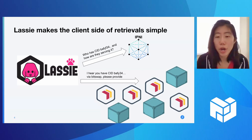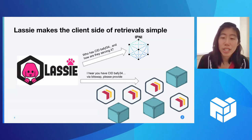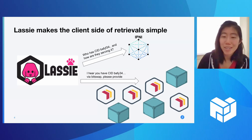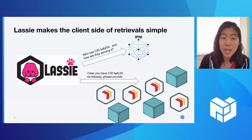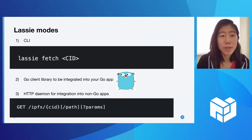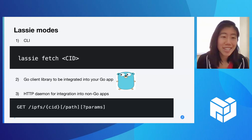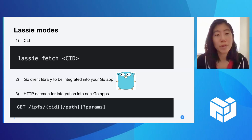Lassie will actually go and ask these different providers to provide the CID. It will race these different providers, and whoever returns the fastest is where you get your data from. There are a couple of different Lassie modes you can use. The first one is the most straightforward: the CLI. You basically download Lassie and run the simple command 'lassie fetch'.